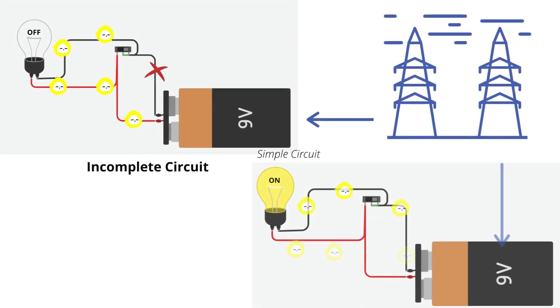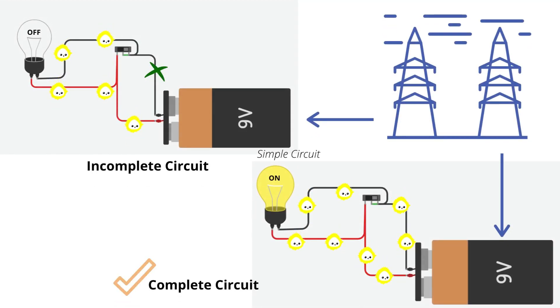This is a simple circuit diagram. As you can see in the first figure, the path of the charge was not completed. That is why the bulb did not glow.